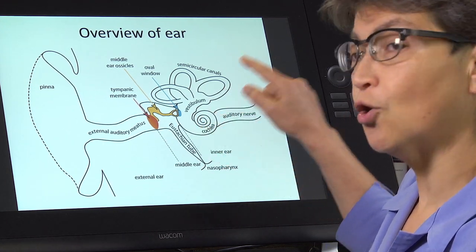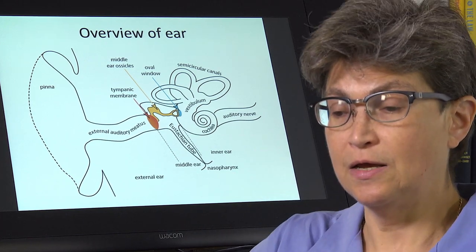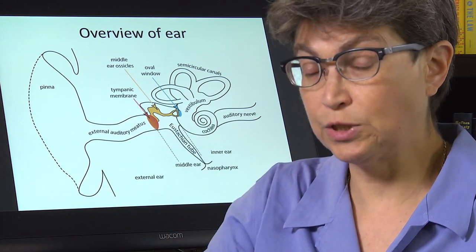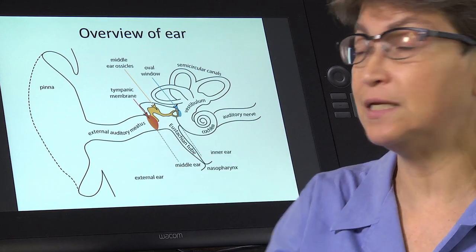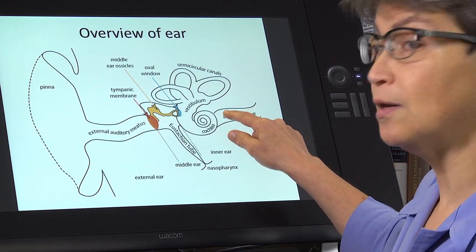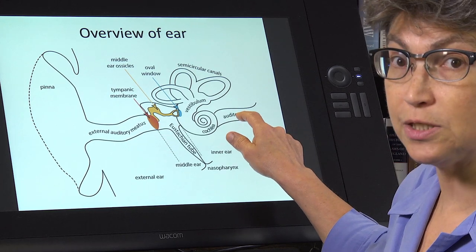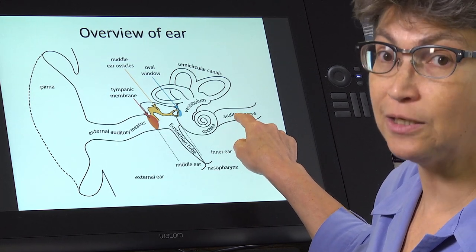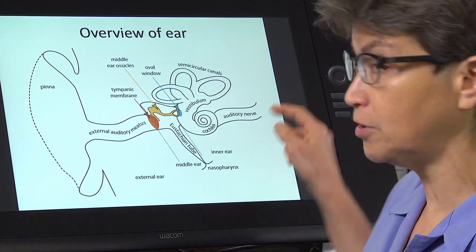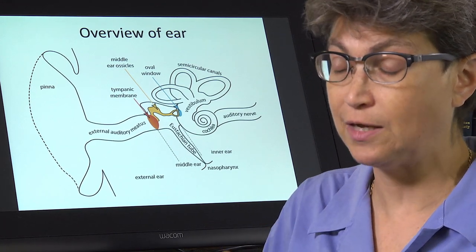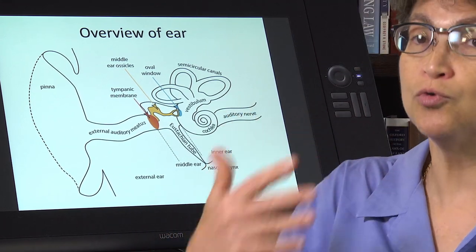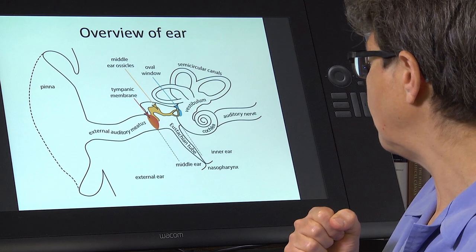Those sensory cells are going to then respond and send a message to the first neurons in the pathway, the auditory neurons. These are spiral ganglion neurons that give rise to the auditory nerve to the cranial nerve eight, to the vestibular cochlear root of cranial nerve eight.